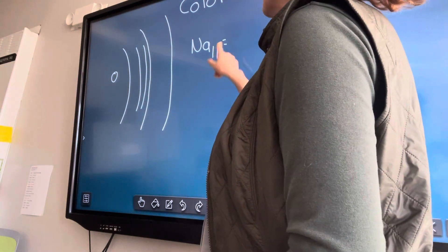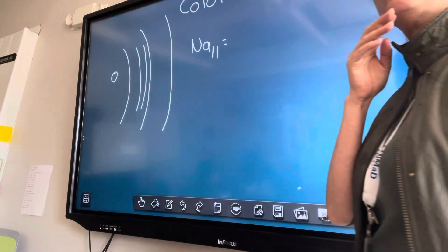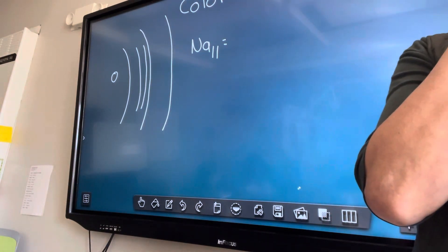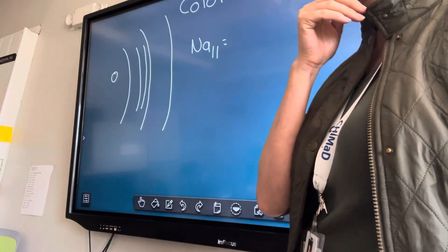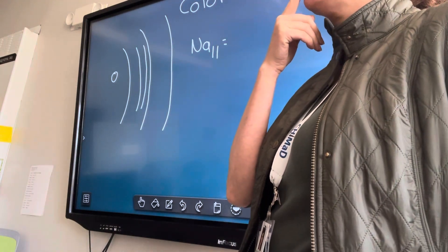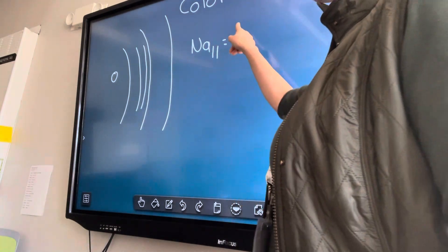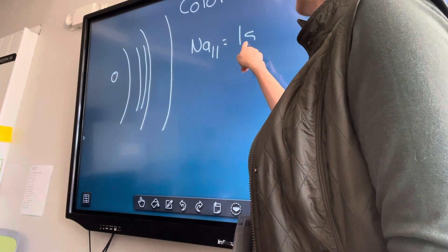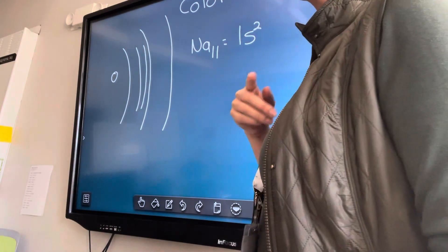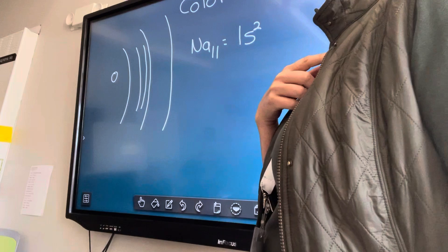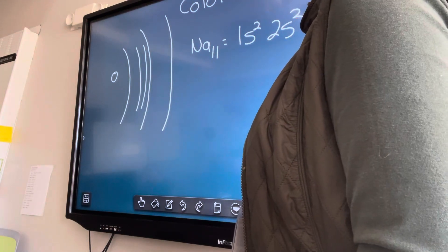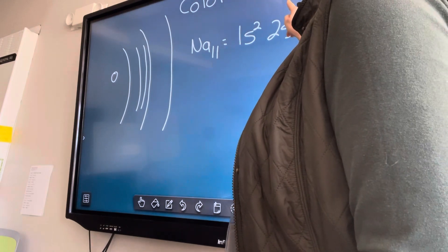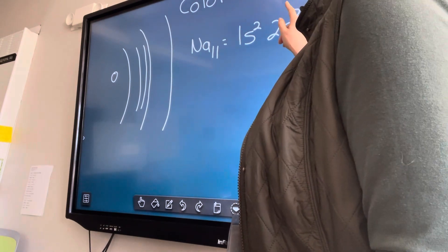And if you do the electron configuration, what is the electron configuration for sodium? Bibi? Sodium is over there, yeah. What letter comes first? 1s² 2s² and...